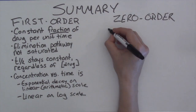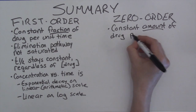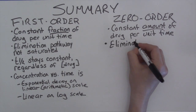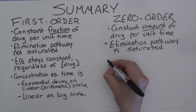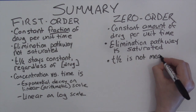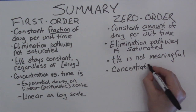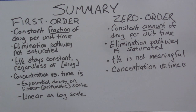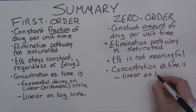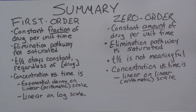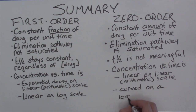For zero-order elimination, a constant amount of drug is eliminated per unit time because the elimination pathway is saturated. You can't calculate a meaningful half-life, because the time to eliminate half of the drug depends on how much drug is actually in the body. When plotted on an arithmetic scale, the graph of concentration versus time is a straight line. When the y-axis is on a logarithmic scale, the graph is a curve that falls off sharply toward the end.